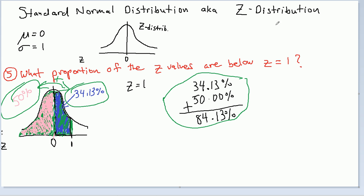Our answer is 84.13% or 0.8413 of the data are below Z equals positive 1.